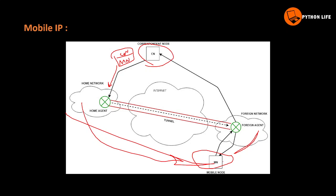If you have a mobile phone, it will have a foreign agent and a connection. It will have a home address and a home agent. This mobile phone is on a home network. It will have a direct home address and a foreign network. By the foreign network, you have to run a foreign address. The home address is a home network. A foreign agent request is used to establish a connection. You can add Care-of Address to the mobile node and create tunneling.